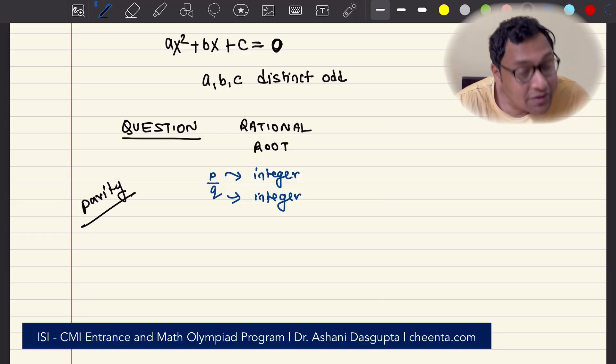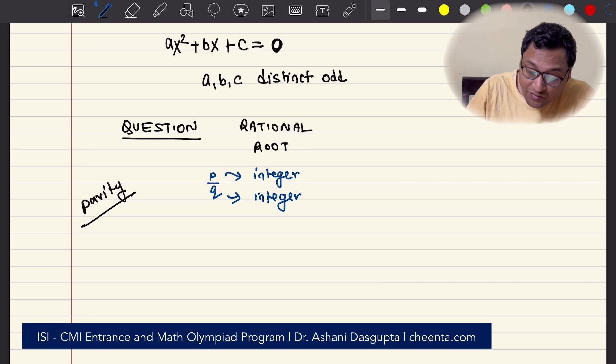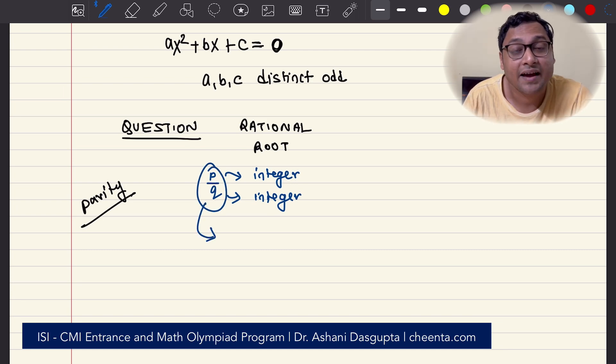How do we do this? Well, there are several ways, but let's assume that P over Q does work. It is a solution, and then try to reach a contradiction.